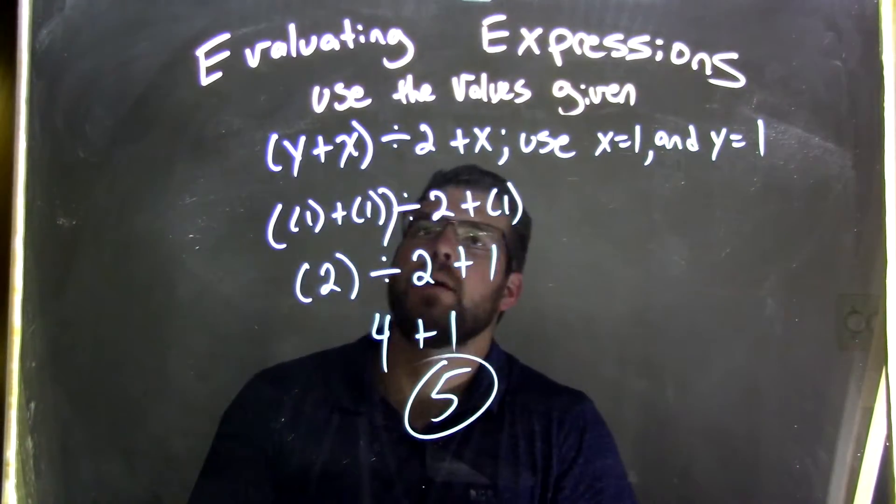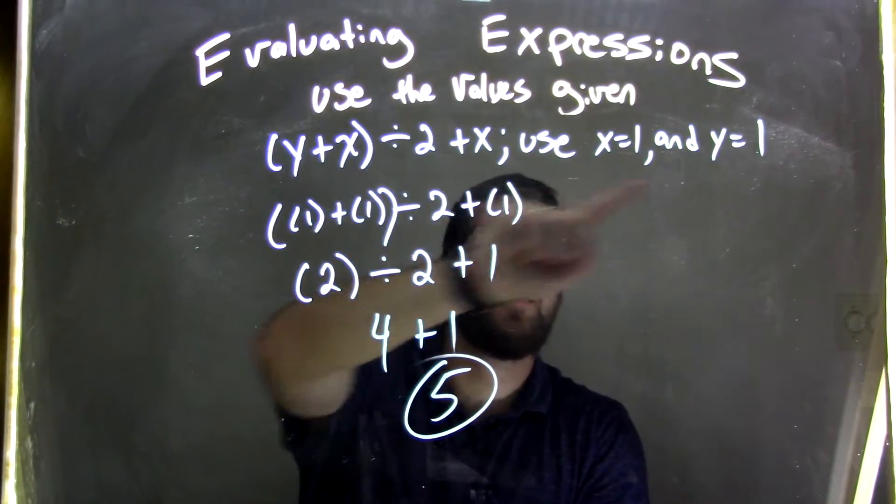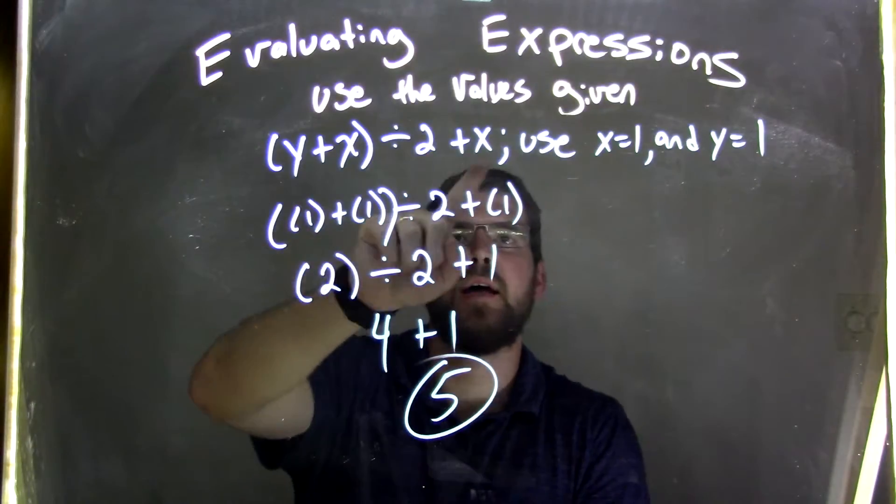So again, let's recap. y plus x divided by 2 plus x, if x is 1 right here, and y is 1 right there, and x is this 1.